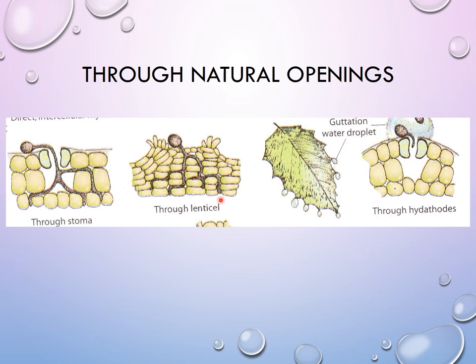The third natural opening is the hydathode, present on the tips and margins of leaves. Hydathodes function to remove excess water by guttation. When the water droplet is pushed out, it may also be sucked back inside bringing the pathogen. So when the hydathode is open and water is sucked in, the pathogen also enters very easily. Examples are mainly bacteria like Xanthomonas and Erwinia, which enter through hydathodes.